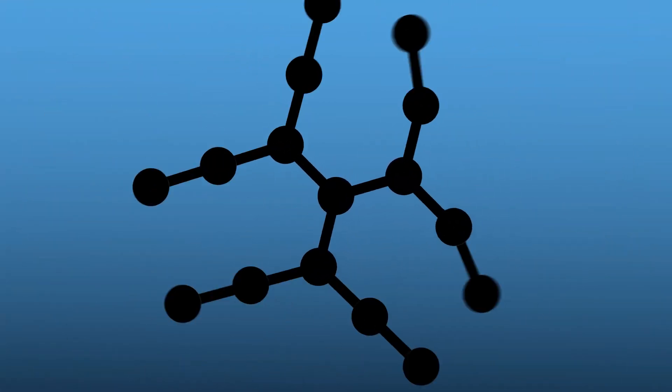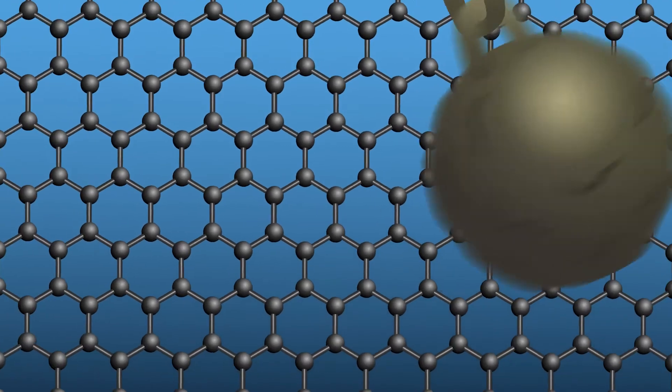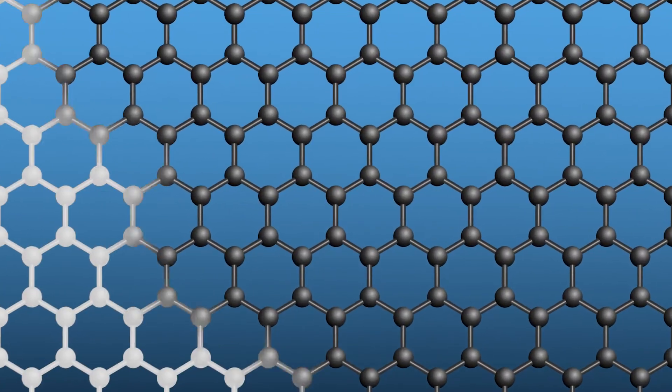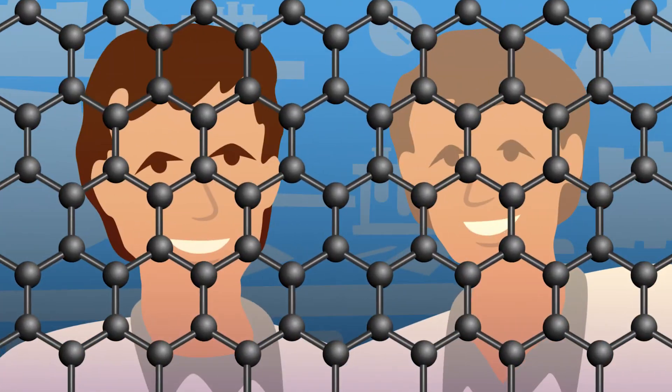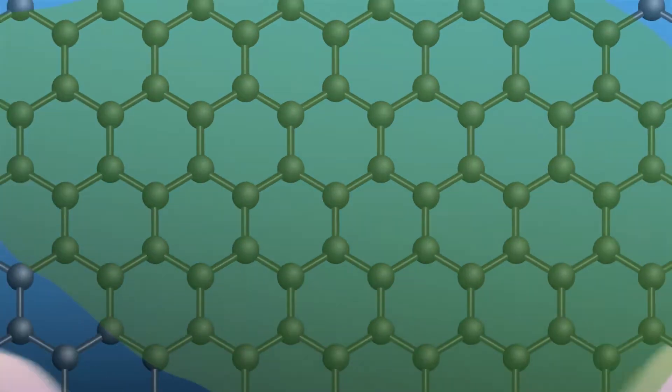Although just one atom thick, graphene is 200 times stronger than steel. It's also conductive, transparent, flexible and light.